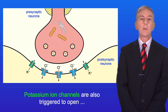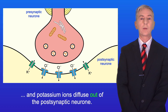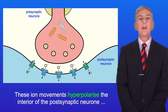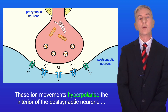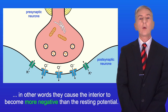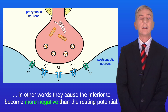Potassium ion channels are also triggered to open and potassium ions diffuse out of the post-synaptic neuron. These ion movements hyperpolarize the interior of the post-synaptic neuron — in other words, they cause the interior to become more negative than the resting potential.